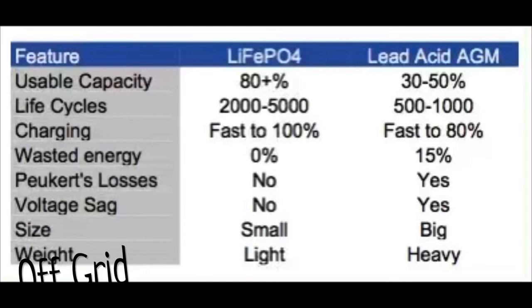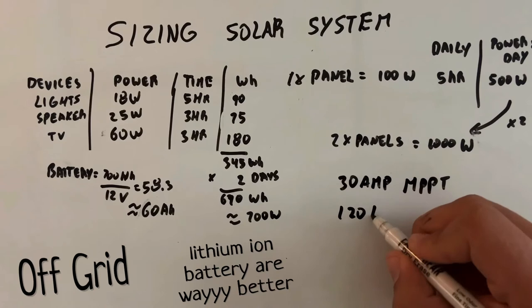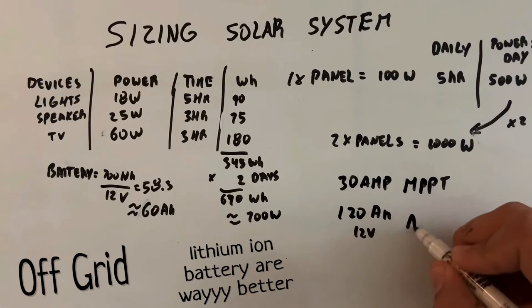Now the batteries. The two most common ones are the AGM and the lithium. Lithium would be the best option. But in our small system, we're going to use the cheaper option, which is AGM.